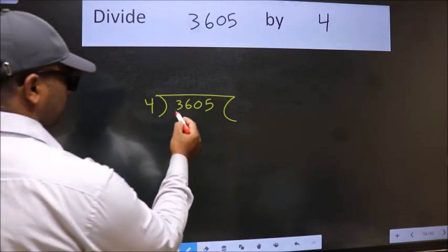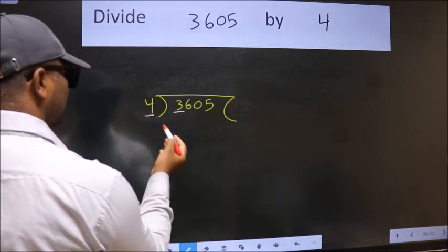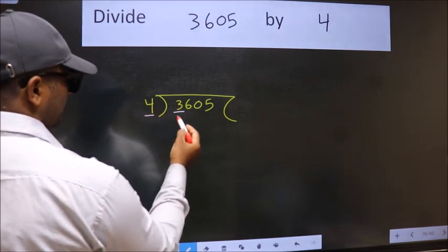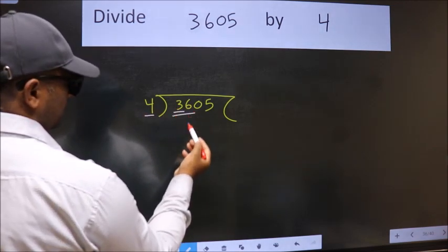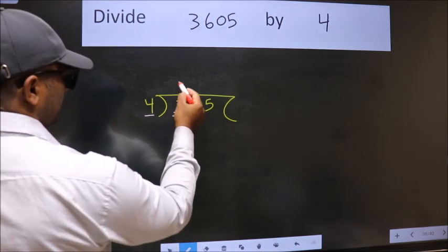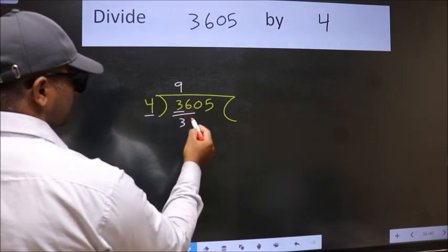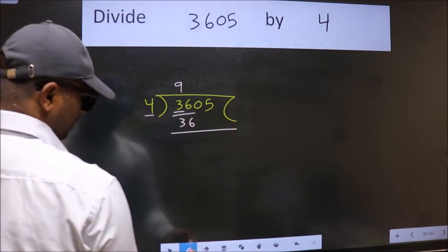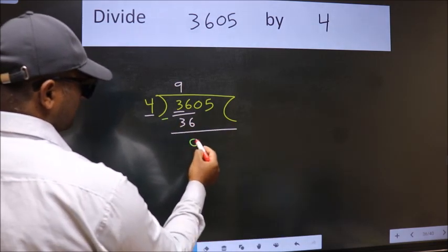Here we have 3, here 4. 3 is smaller than 4, so we should take two numbers, 36. When do we get 36 in the 4 table? 4 nines 36. Now we should subtract. We get 0.